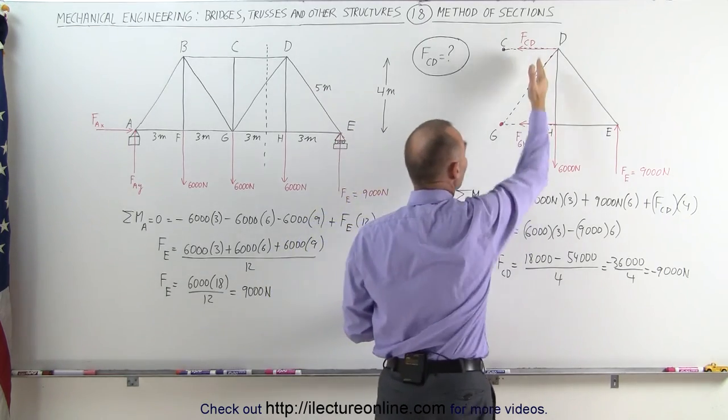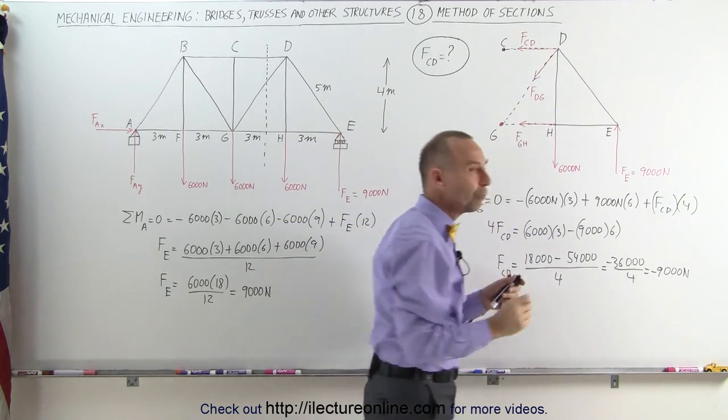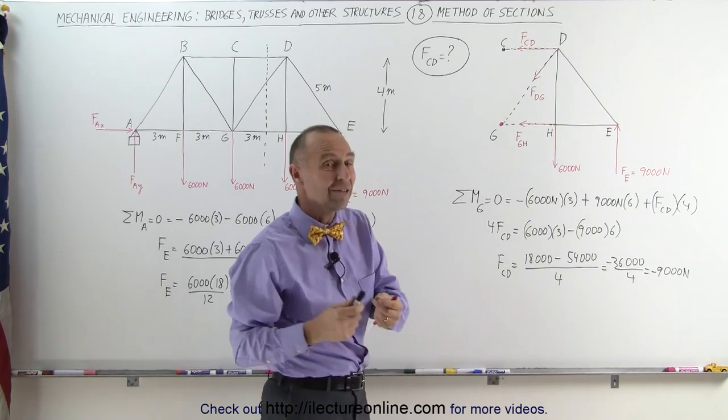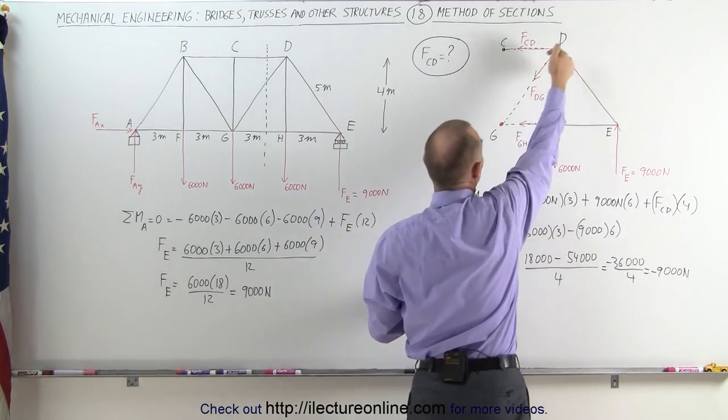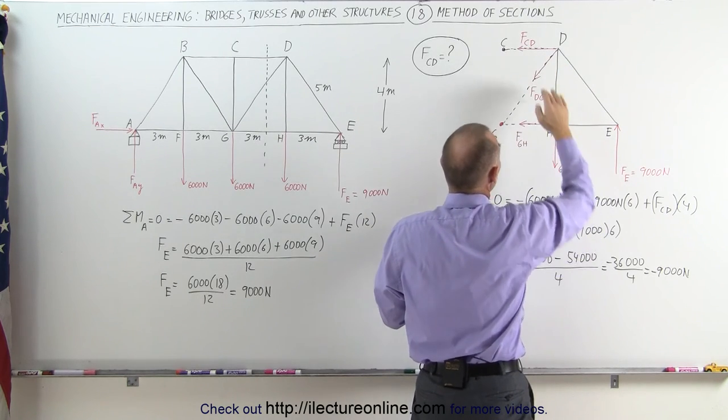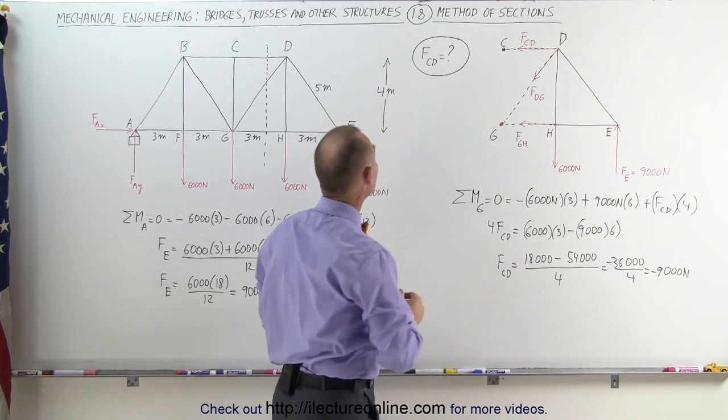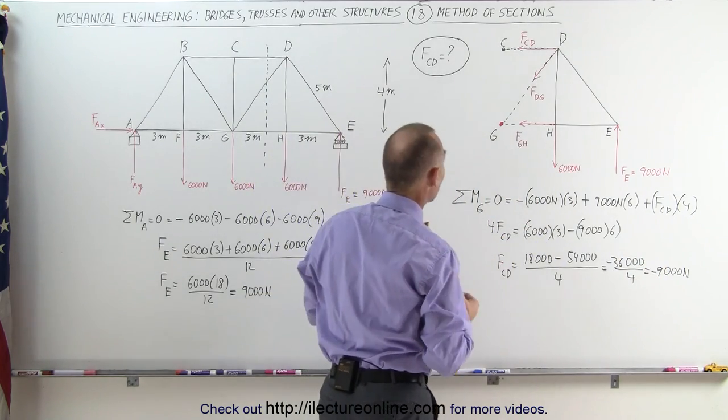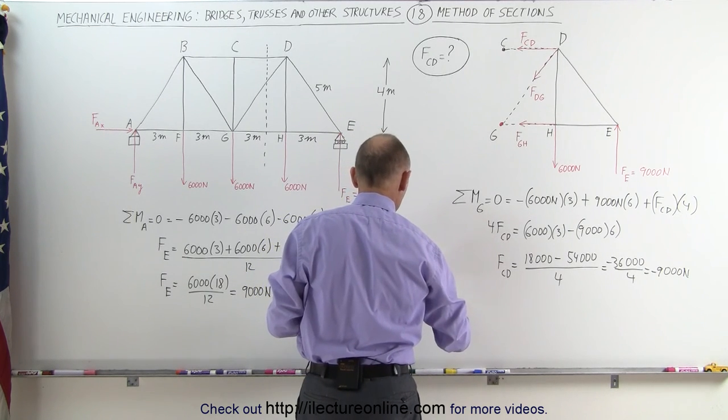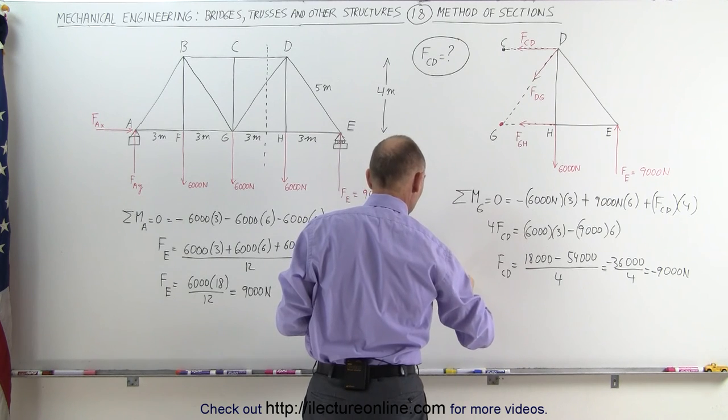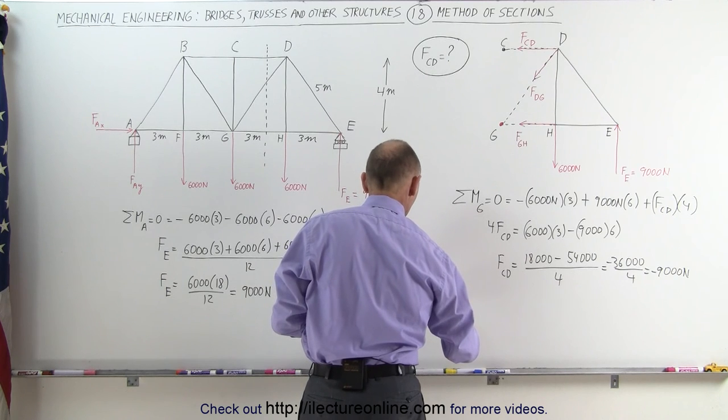The way you usually draw the forces on the section that you remove from the total structure, you tend to show the forces as if they are tension forces. But then if you get a negative answer, then it's actually a compression force. So you start out by drawing the vectors as if they're tensions, but if you get negative value like in this case for FCD, then what that means is you actually have a compression on the member between C and D. And so the final answer is the force CD is equal to 9,000 newtons, that's the magnitude of force. And instead of having a tension, we have a force of compression on that beam.